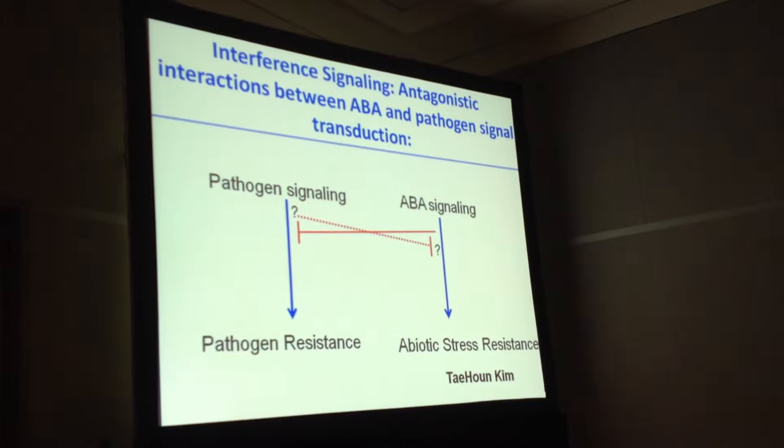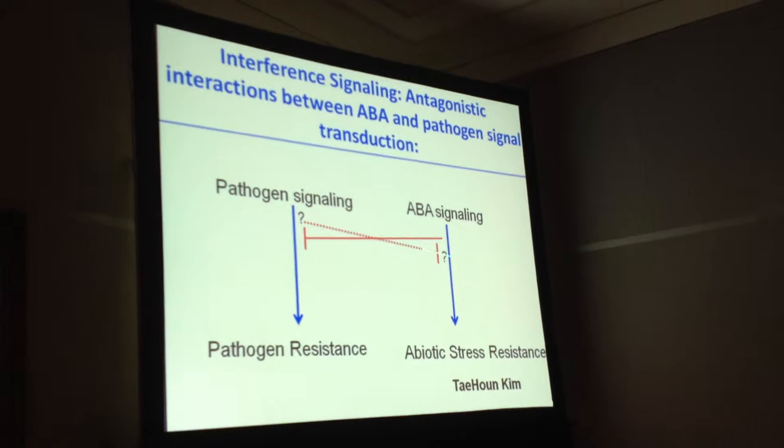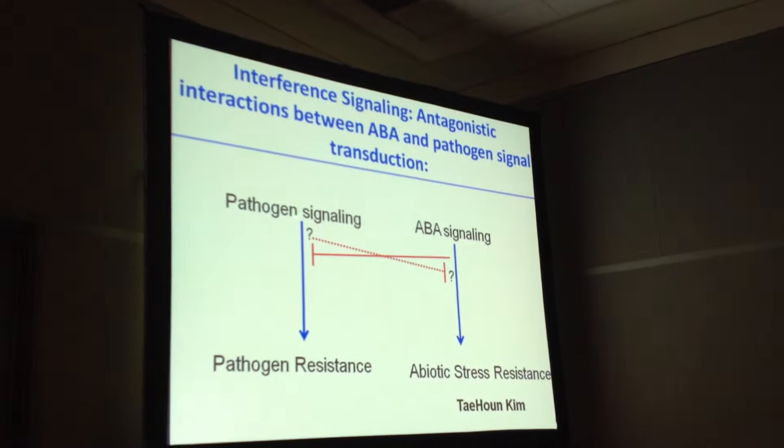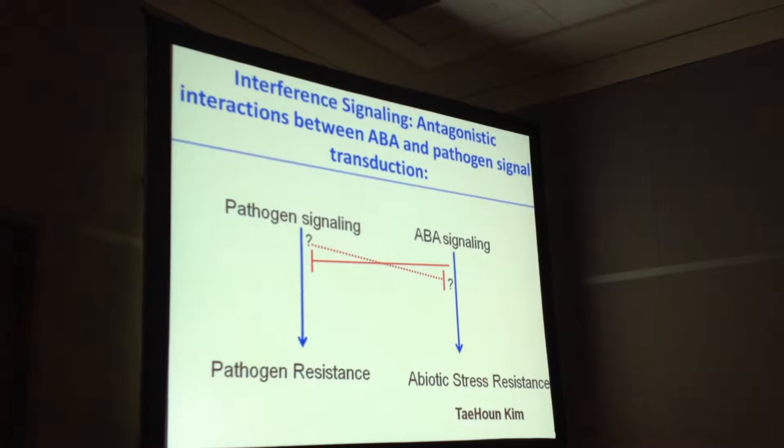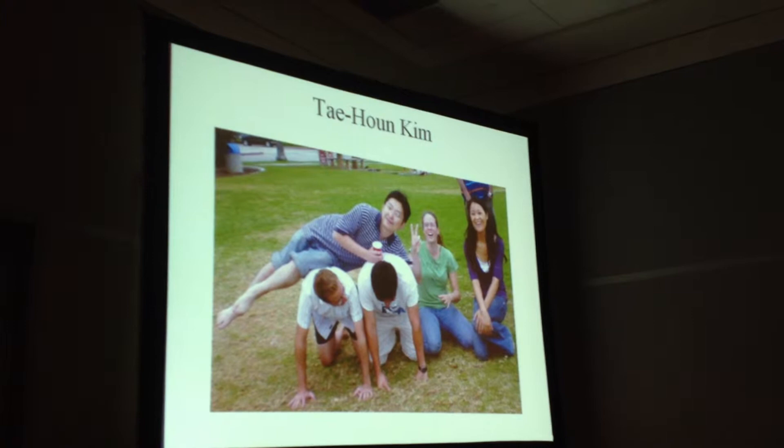When Tae-hoon Kim joined my lab in 2004, we set out to do a chemical genetics project looking for small molecules that down-regulate or impair ABA signaling. Tae-hoon found a small molecule that turns on effector-triggered immune signaling and rapidly turns off ABA signaling. This is an overview of what my talk is about — Tae-hoon was a very bright and creative person.